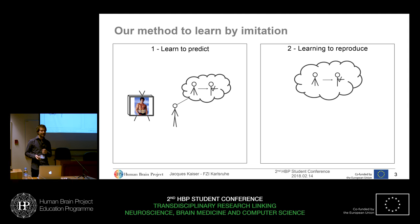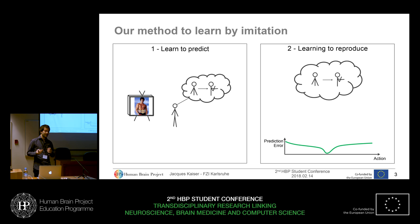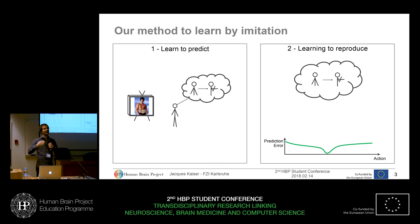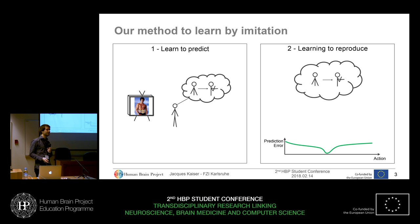Step two is you want to reproduce what you can predict. For this step, you use your prediction model and define a function that maps an action — an action that the robot can perform — to a prediction error. We do that in a way that the prediction error is very low for movements that the robot performs which are very visually similar to what the robot can predict. Once we define such a function, we basically optimize this function to recover the movement that the robot can predict.